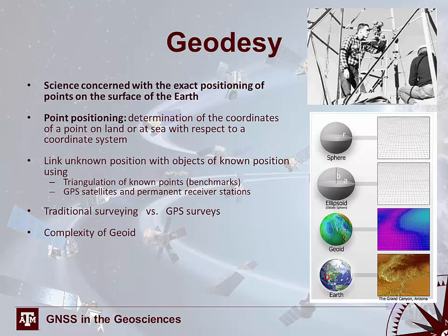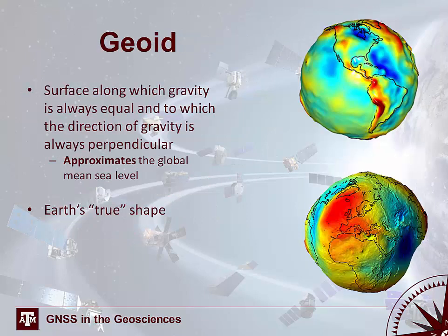Point positioning can be done many different ways, which can be broadly categorized into traditional surveying and GPS surveying. Each of these surveying techniques are further complicated by the complexity of the geoid. The geoid itself is a surface along which gravity is always equal and to which the direction of gravity is always perpendicular. Essentially, the geoid is an approximation of global mean sea level.